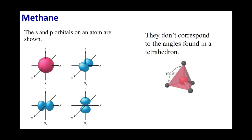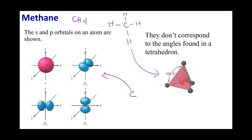For example, let's look at methane, CH4. If I draw the Lewis dot structure, I have carbon bonded to four hydrogens, and using VSEPR I get a tetrahedral geometry. But let's think about what's happening: if I have carbon in the center, its valence orbitals are a 2s, 2py, 2px, and 2pz. These are my outermost orbitals. I want you to remember the directions these orbitals point — the s orbital is completely symmetric, but px, py, and pz are all 90 degrees away from each other.